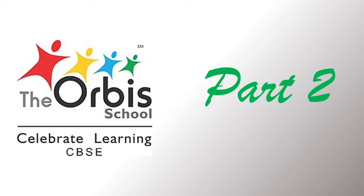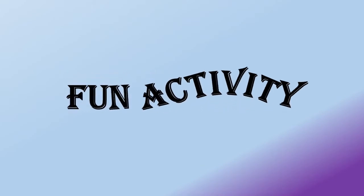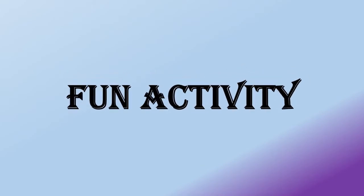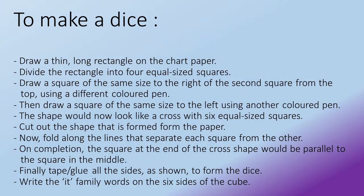Part two, now children, we have a fun activity. Let's see what all material are required for it. We need a chart paper, scissors, glue stick, and colored pens. Children, we are making a dice to understand the it family words.